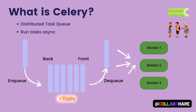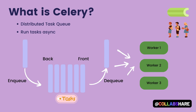The task queue ensures that the workers process the tasks in the order they were added and helps balance the workload among the workers. Task queues are commonly used in distributed systems and parallel computing environments where multiple threads or processes process tasks simultaneously. They are also used in web applications to manage background tasks, or to schedule delayed or periodic tasks. A popular implementation of task queues is Celery.